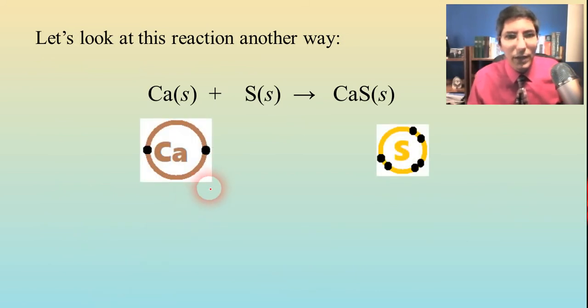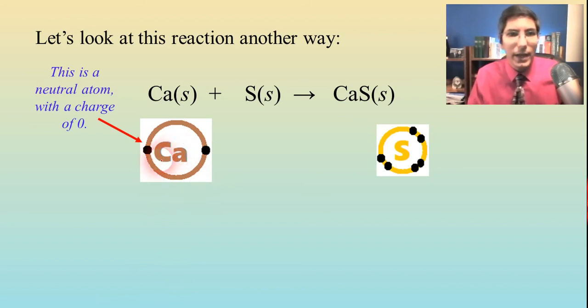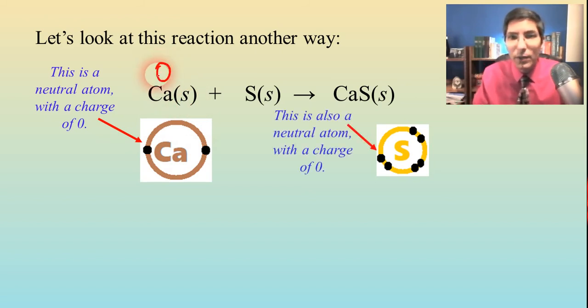We have the calcium that started out as a neutral atom. It had a charge of zero, as all elements in their most natural state do. And guess what? The sulfur was the same way. All elements in their most natural state have a charge of zero.